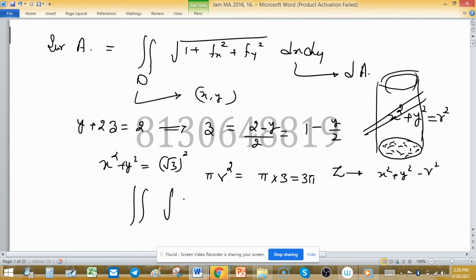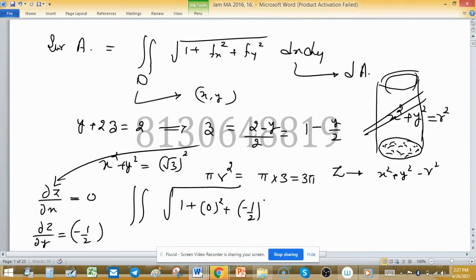So square root of 1 plus partial z with respect to x will be from this. Because x is not involved here, so partial z with respect to x will be 0. And partial z with respect to y will be minus half. For this value here, 0 squared plus minus half squared.